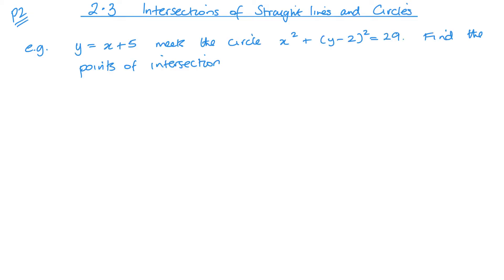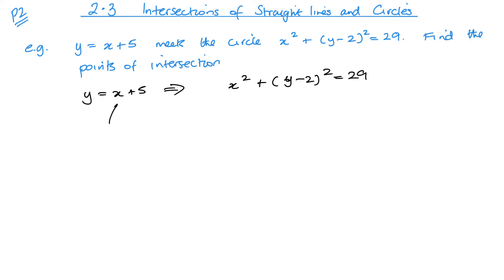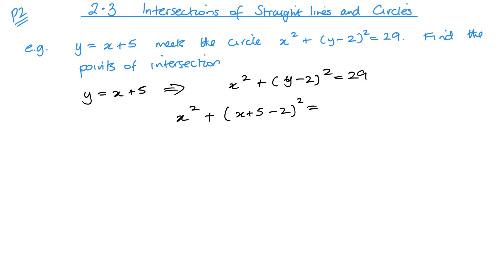Let's look at an example. We have y = x + 5, and it meets the circle x² + (y − 2)² = 29. Find the points of intersection. We want to substitute the equation of the straight line into the equation of the circle. I can eliminate either x or y — I could rearrange to x = y − 5, but in this case it's easier to substitute y directly. So we get x² + (x + 5 − 2)² = 29, which is x² + (x + 3)² = 29.